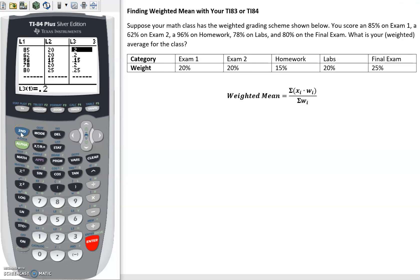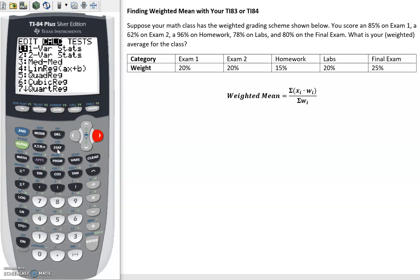Okay, let's go back to the main screen. So 2nd and mode, that'll quit us back to the main screen. If you click on stat and then go over 1, do 1 variable stats. So list, we can say list 1. I want my scores in list 1.